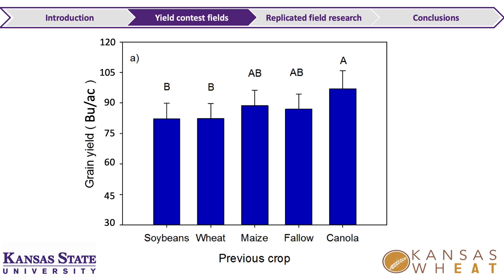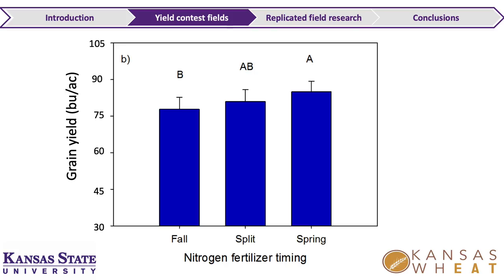As far as previous crop, fields going into wheat after wheat or soybeans were yielding a little less than fields coming after canola — and there's some Oklahoma field research supporting that. Looking at nitrogen timing: fields putting all nitrogen in the fall yielded slightly less than fields putting at least 60 percent of nitrogen in the spring.